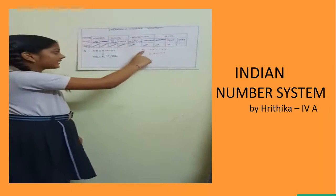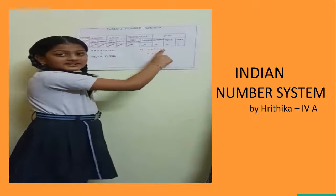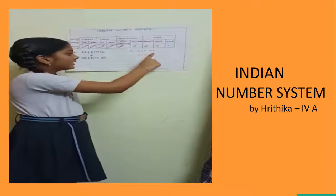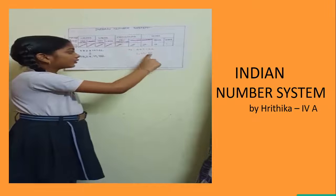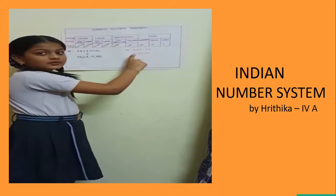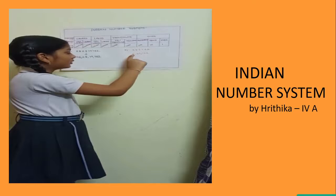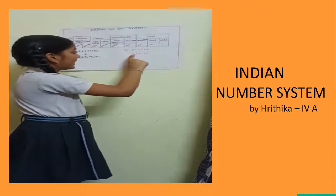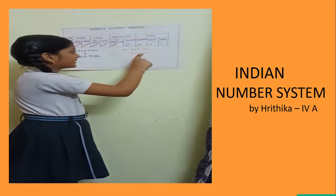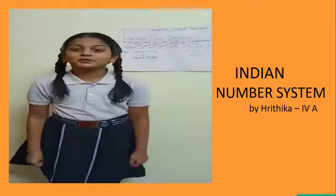I'll take another example. This is a six-digit number. It is difficult to read, so by grouping it with commas, it is easy to read: two lakhs, forty-seven thousand, one hundred and sixty-two. Thank you.